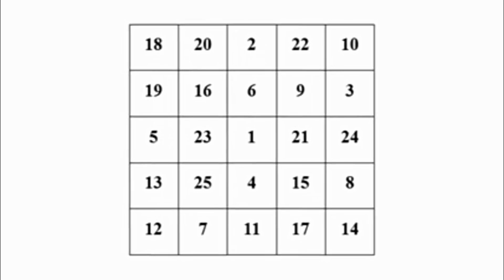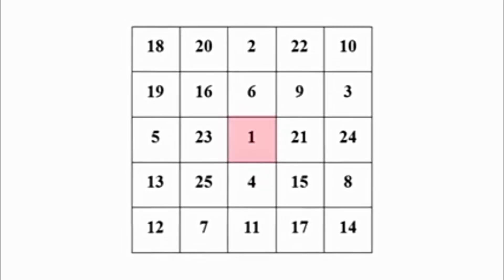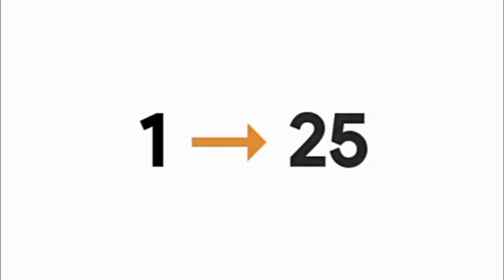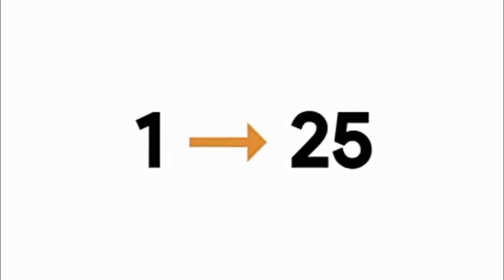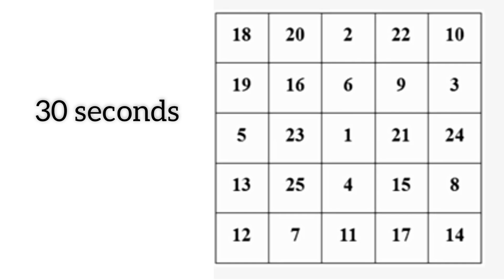The table has 1 to 25 numbers. In 30 seconds, you will find 1 to 25 numbers in order. That is the task — try it and see how many you can do.